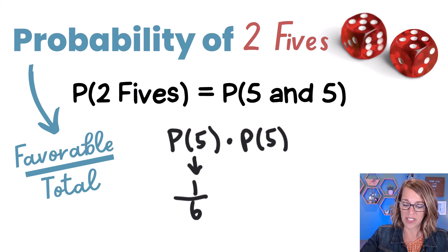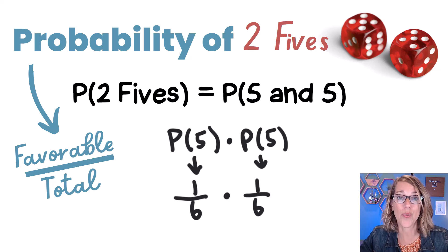Now I can do the probability of that second dice. So for that second one, the probability of five, it's going to be the same, right? There's again one five on that dice out of the six total.